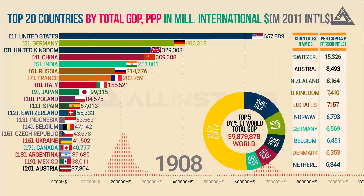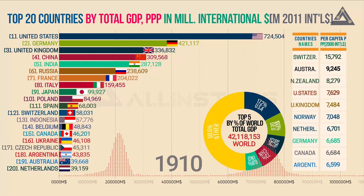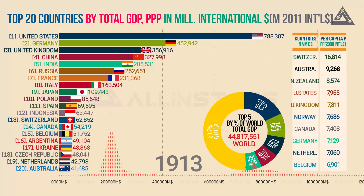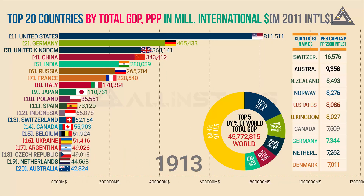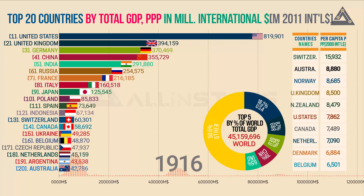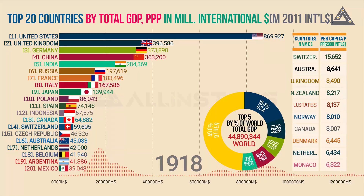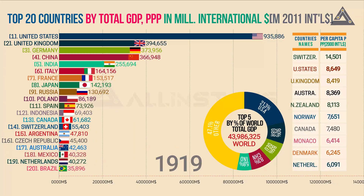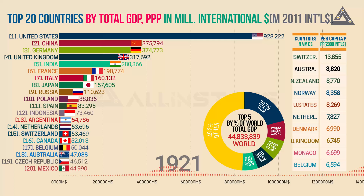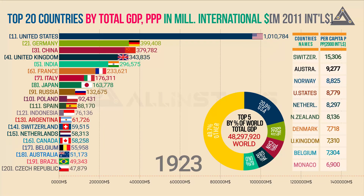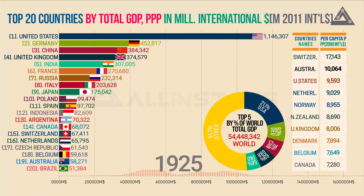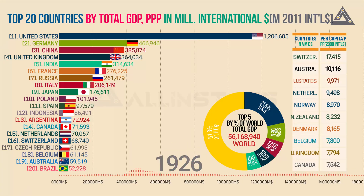Before the modern era of economic growth, the economy worked very differently. Not technological progress, but the size of the population determined the standards of living. In the very long time in which humanity was trapped in the Malthusian economy, it was births and deaths that determined incomes. More births meant lower incomes. More deaths meant higher incomes.